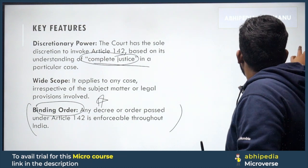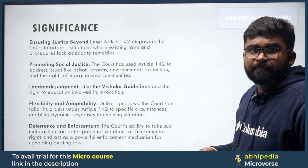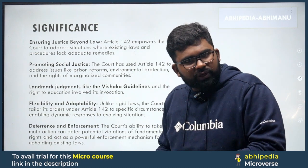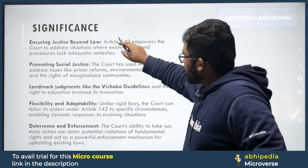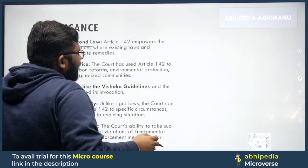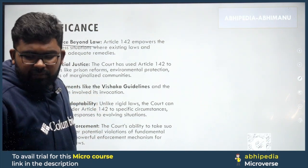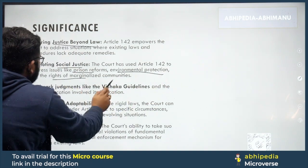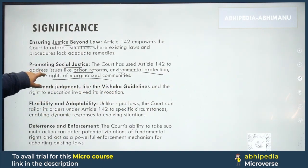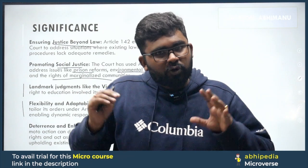There are ways to bypass Article 142, but you would have to remove laws from the Constitution, and then the Supreme Court will again examine whether something is constitutional or not. The significance of this article is ensuring justice beyond the law — because law is meant to enforce justice, and Article 142 promotes social justice. The court has used it to address issues like prison reforms, environmental protection, and rights of marginalized communities.